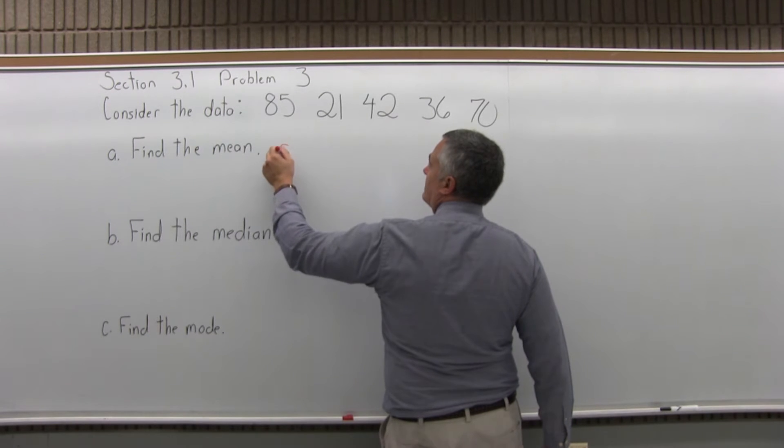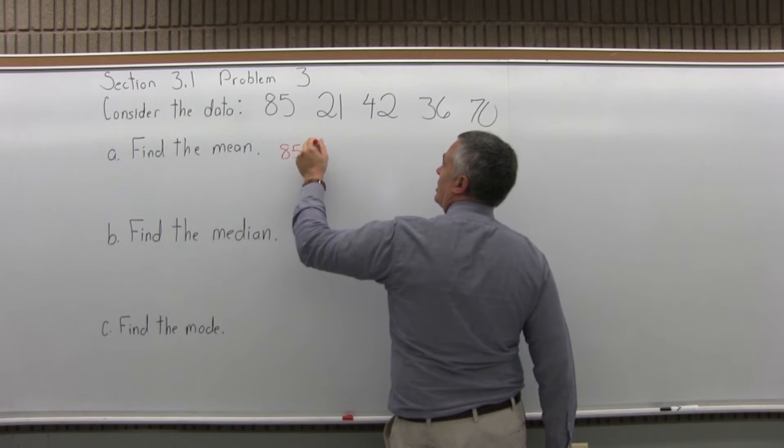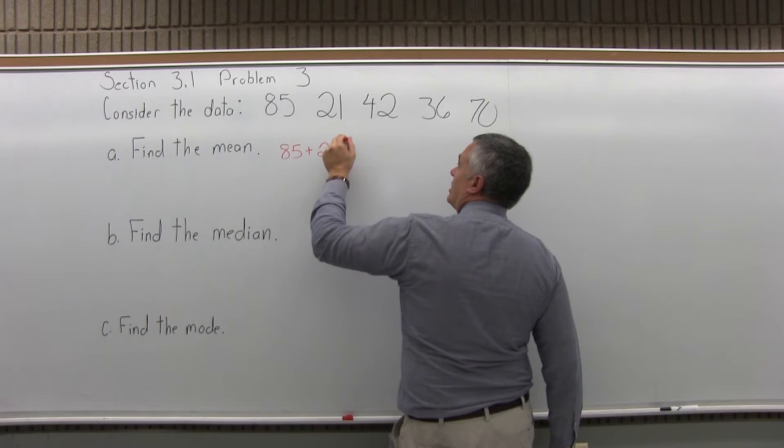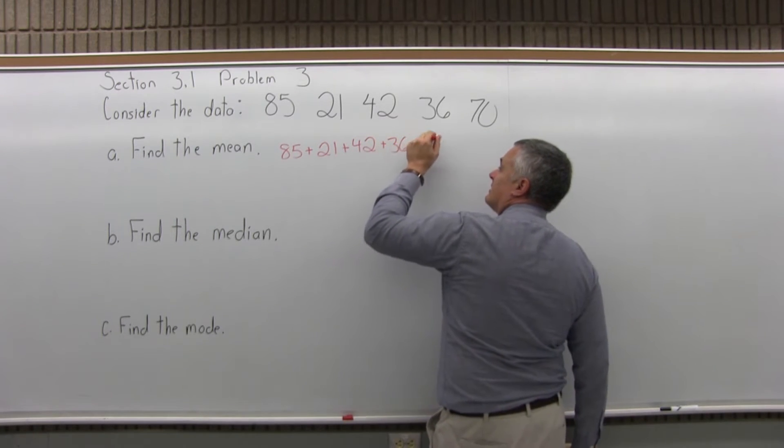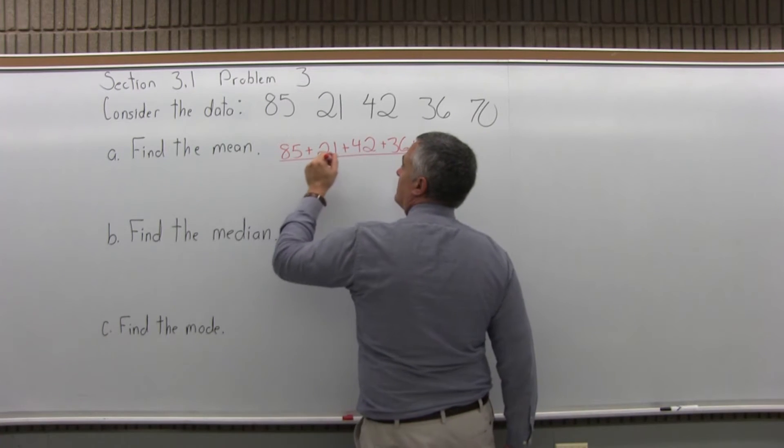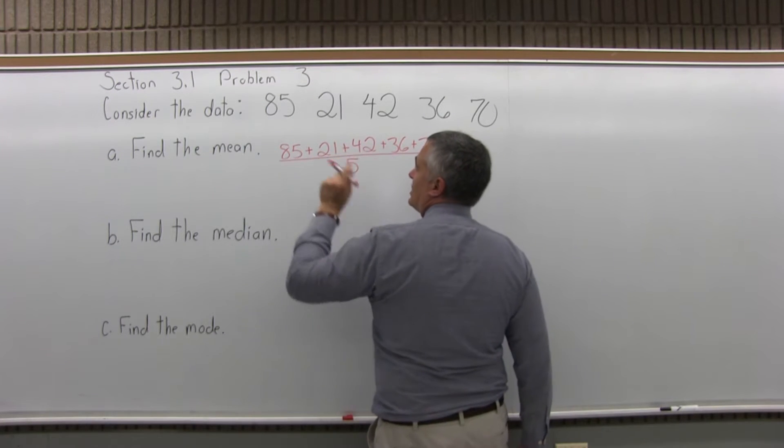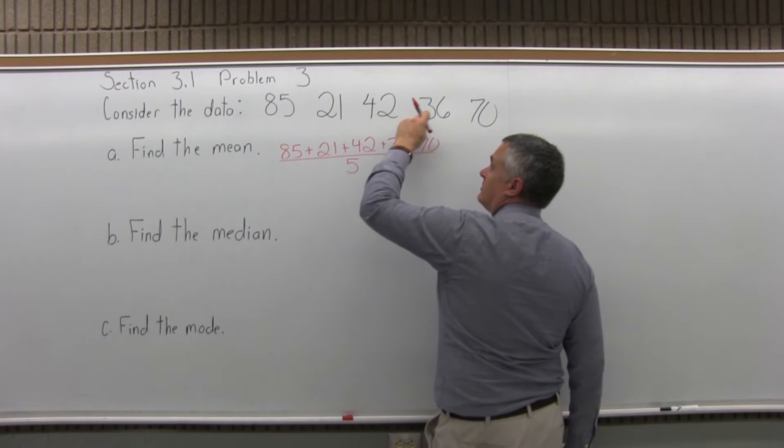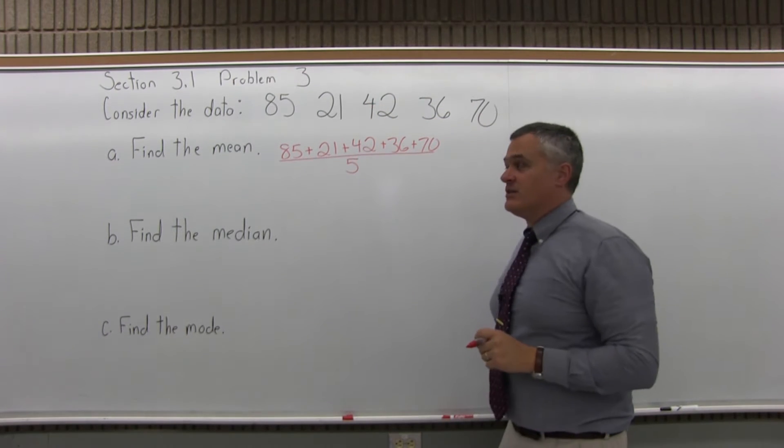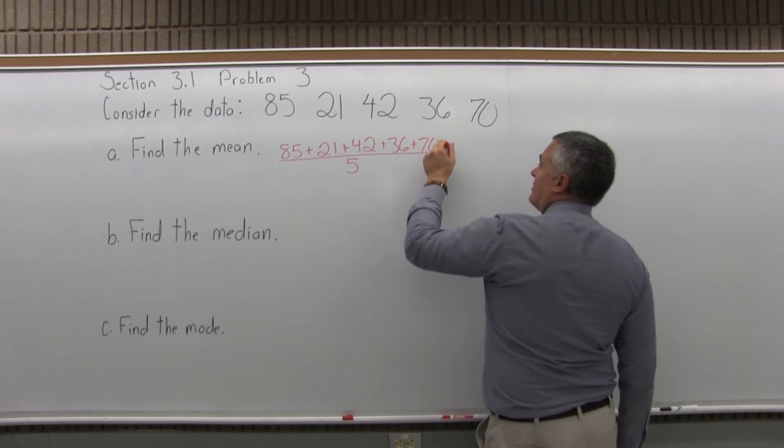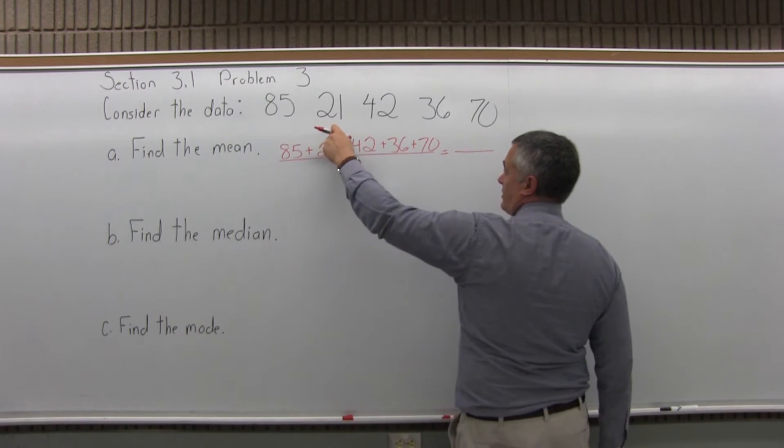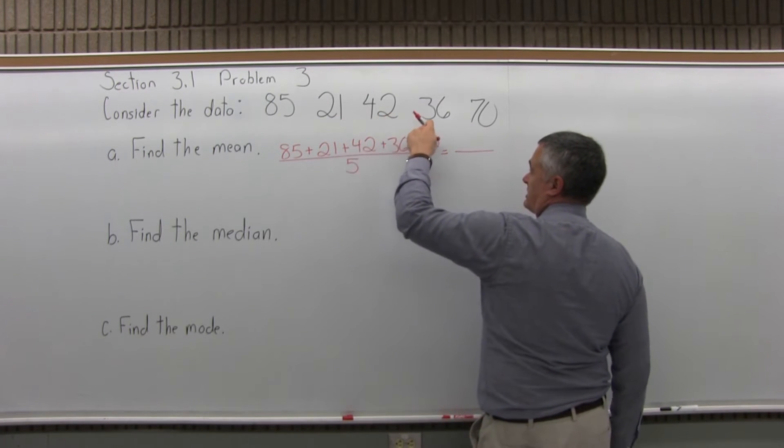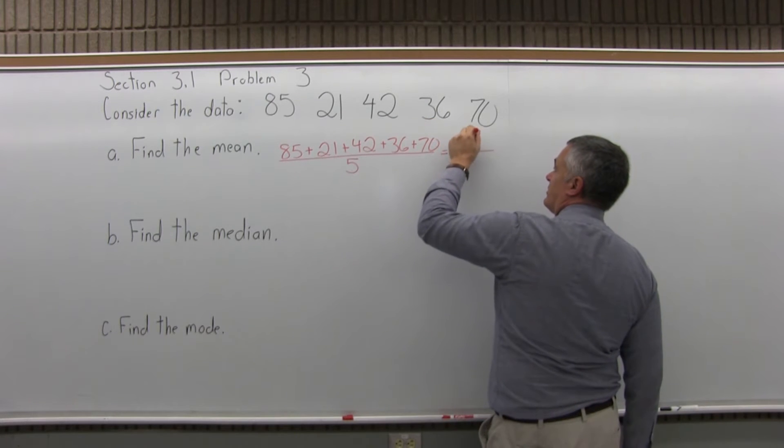So for the mean, you would add the data together, 85 plus 21 plus 42 plus 36 plus 70, divided by 5, because we have 1, 2, 3, 4, 5 data values. So if you add the top together, you could do with the calculator, 85 plus 21 plus 42 plus 36 plus 70, adds up to a total of 254.